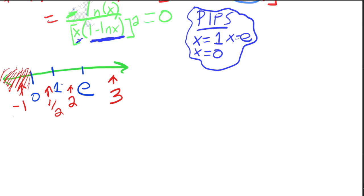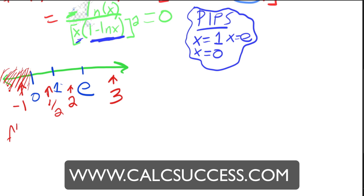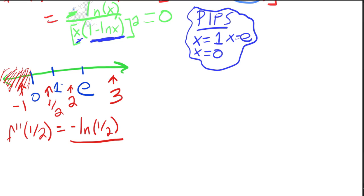Let's plug in x equals one-half into the second derivative. We get negative natural log of one-half over the denominator, which is squared so it's positive. Since natural log of one-half is negative, the negative of a negative is positive. So the function is concave up on that interval.